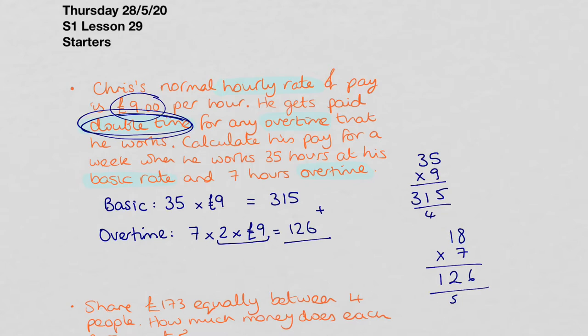And so the total amount that he would get paid for those 35 normal hours and 7 hours overtime is 5 and 6 is 11, 1 and 2 is 3, add the 1 makes 4, 3 and 1 is 4. So his total for the week would be £441.